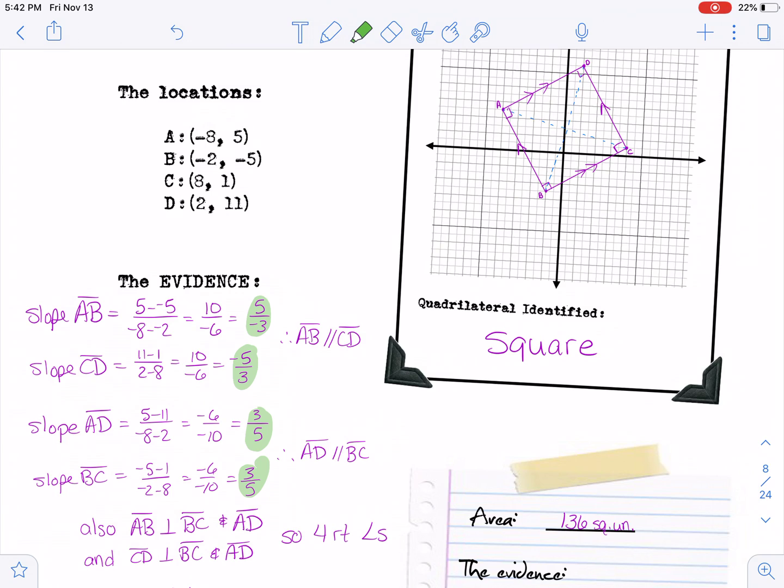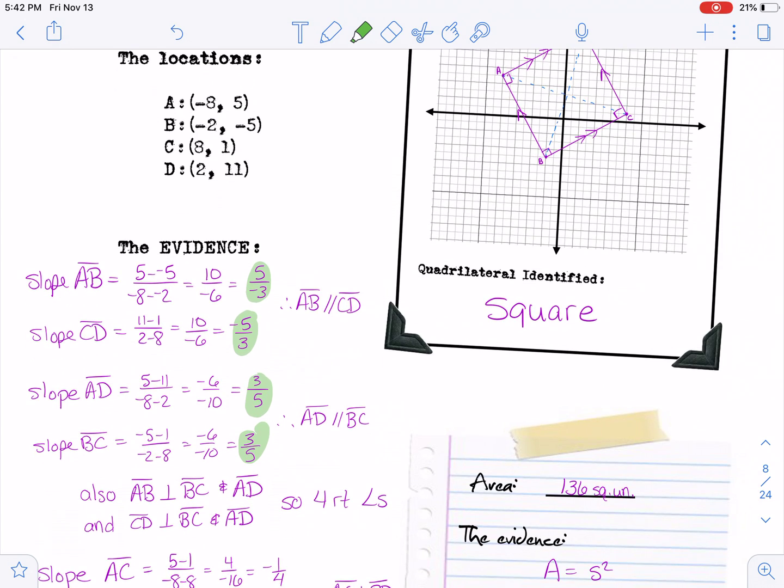So that makes it a parallelogram and because the slopes are negative five over three and then positive three over five, you also have the perpendiculars here. AB is perpendicular to BC and it's also perpendicular to AD. CD is perpendicular to BC and also to AD. So you've got all four right angles at that point.